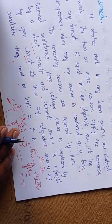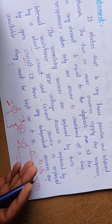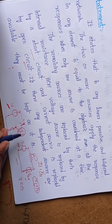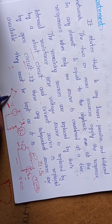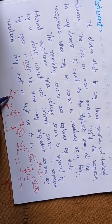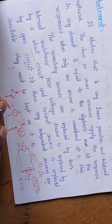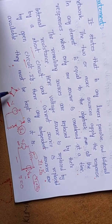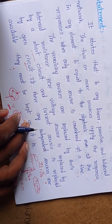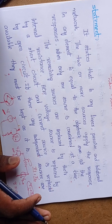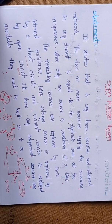If we have any dependent sources — that means sources like the diamond symbol which depend on circuit parameters, as opposed to independent sources — if we have any dependent sources in our network, keep the dependent sources as they are. That covers the statement of the superposition theorem.